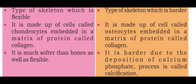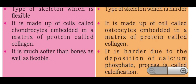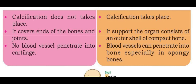Bone is harder due to the deposition of calcium phosphate — a process called calcification. Calcification does not take place in cartilage, but calcification takes place in bone. It covers the ends of bones and joints, supports the organs, and consists of an outer shell of compact bone.